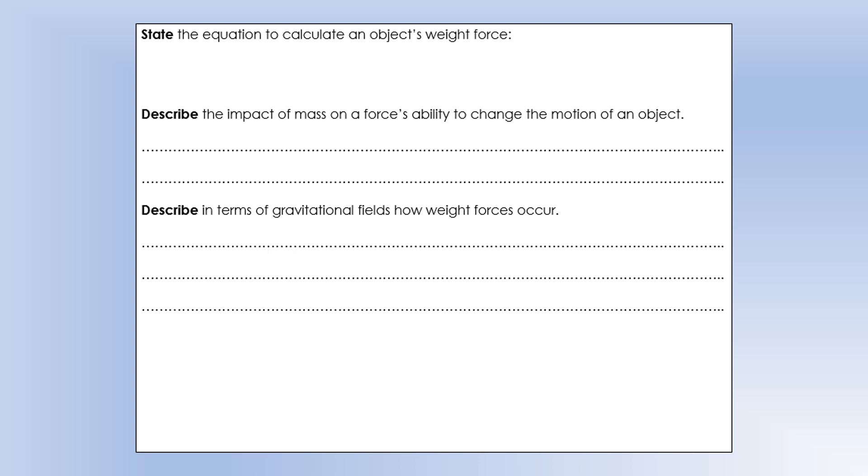Let's make a start looking at forces, motion and energy. Starting off, calculate an object's weight force. The equation we need is weight force is gravitational field strength times by the mass, commonly seen in the form W equals mg.